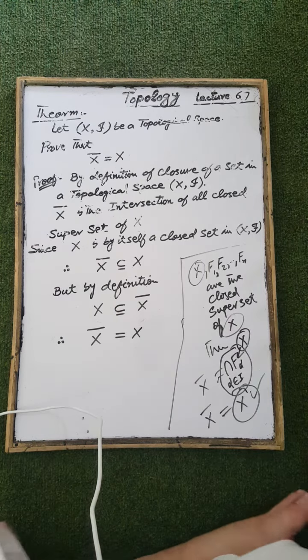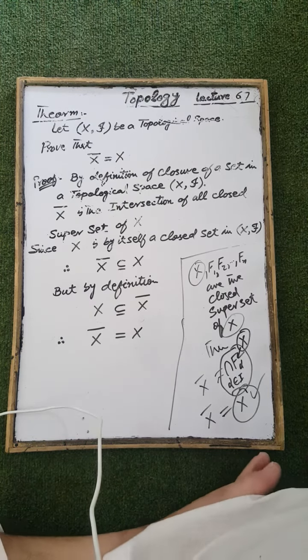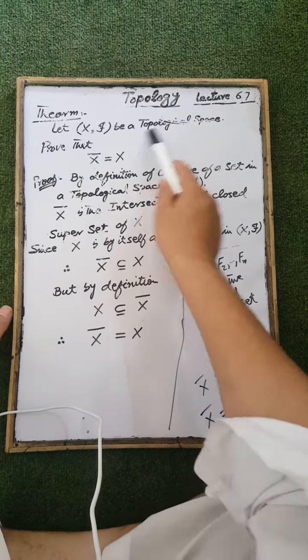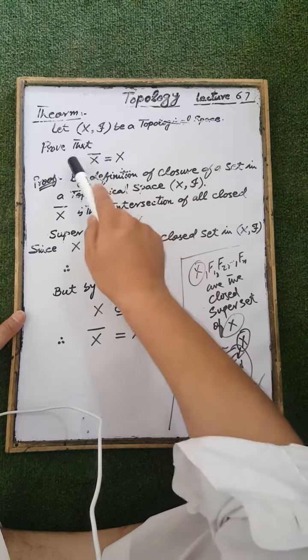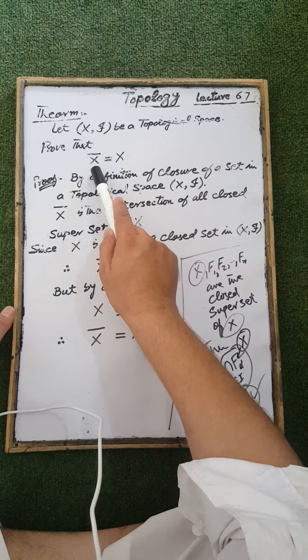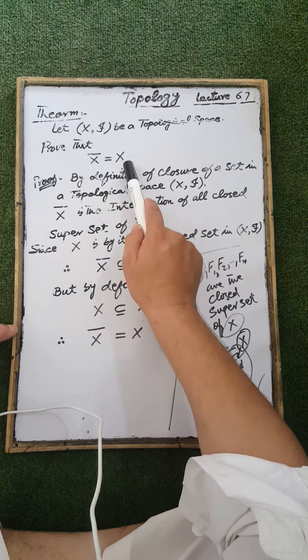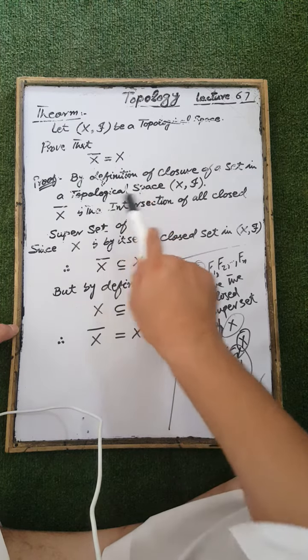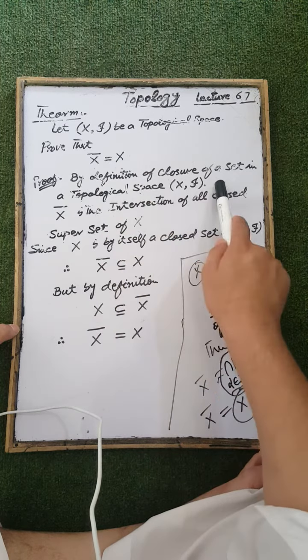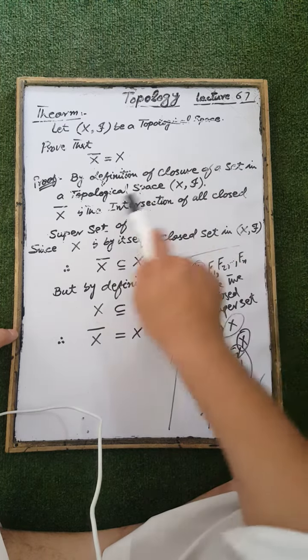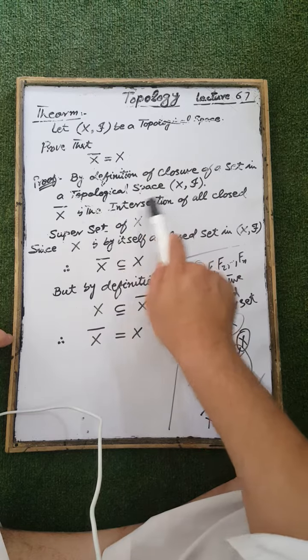The next topic: let X be a topological space. Prove that the closure of the ground set X is equal to the ground set X. By definition of the closure of a set in a topological space X.